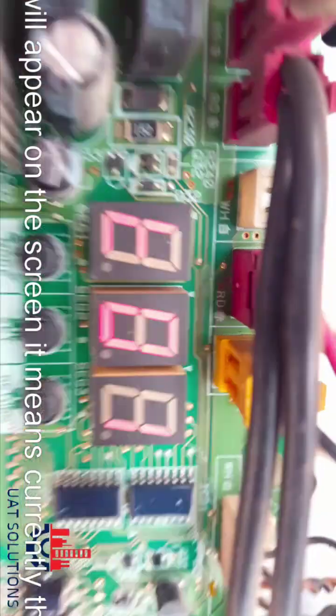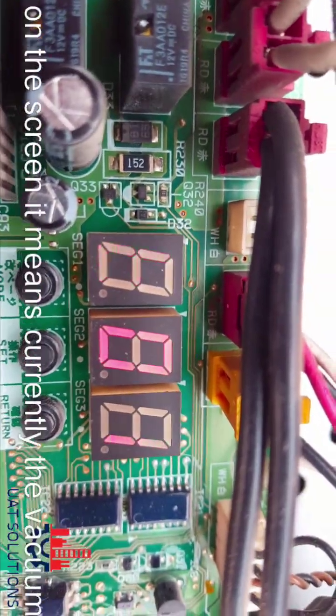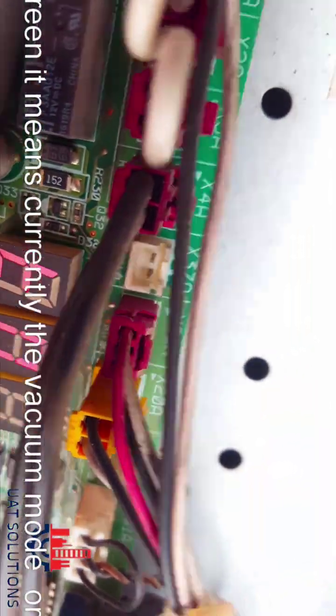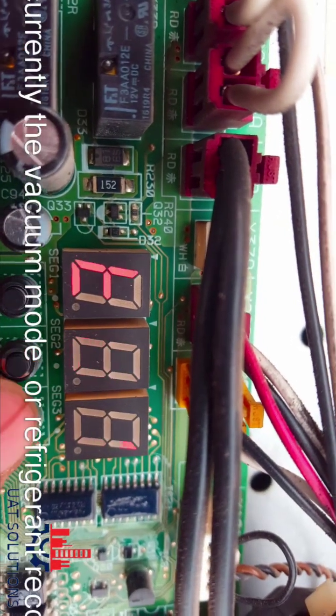Then press the BS3 set button once to confirm the setting. The screen will now display 2.1, which means all the valves within the system are now open.